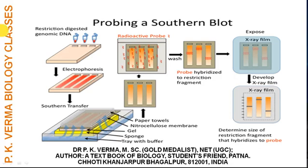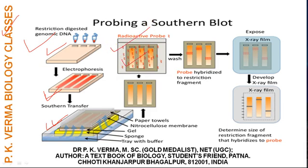The steps are: restriction enzyme digests DNA, electrophoresis is conducted, southern blotting is done, the DNA samples come onto the nitrocellulose paper, the extra probe is washed away and only the bands remain on the nitrocellulose paper, and finally an X-ray film is prepared.